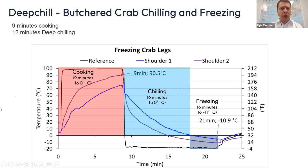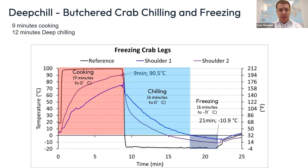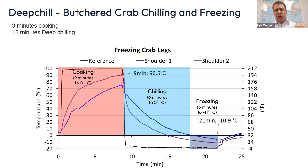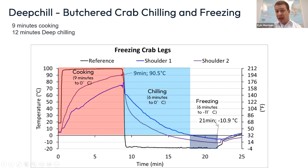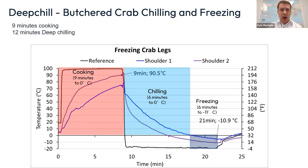Another test with butchered crab explored using a single tank instead of a dual tank system. It goes directly from the cooker into the brine chiller: nine minutes to go from five degrees up to 90 degrees Celsius, only six minutes to crash to zero, and another six minutes to bring it down to negative 11 degrees Celsius. If you're looking to optimize your operation by going from two or three tanks down to one, that's definitely an option we can support.